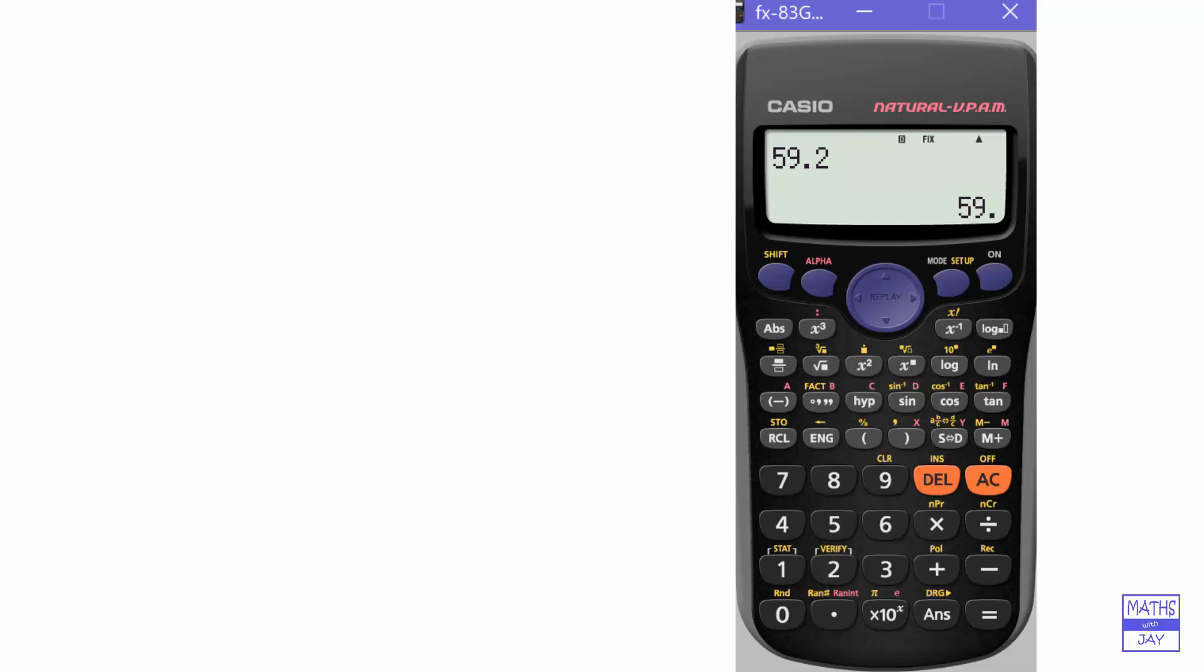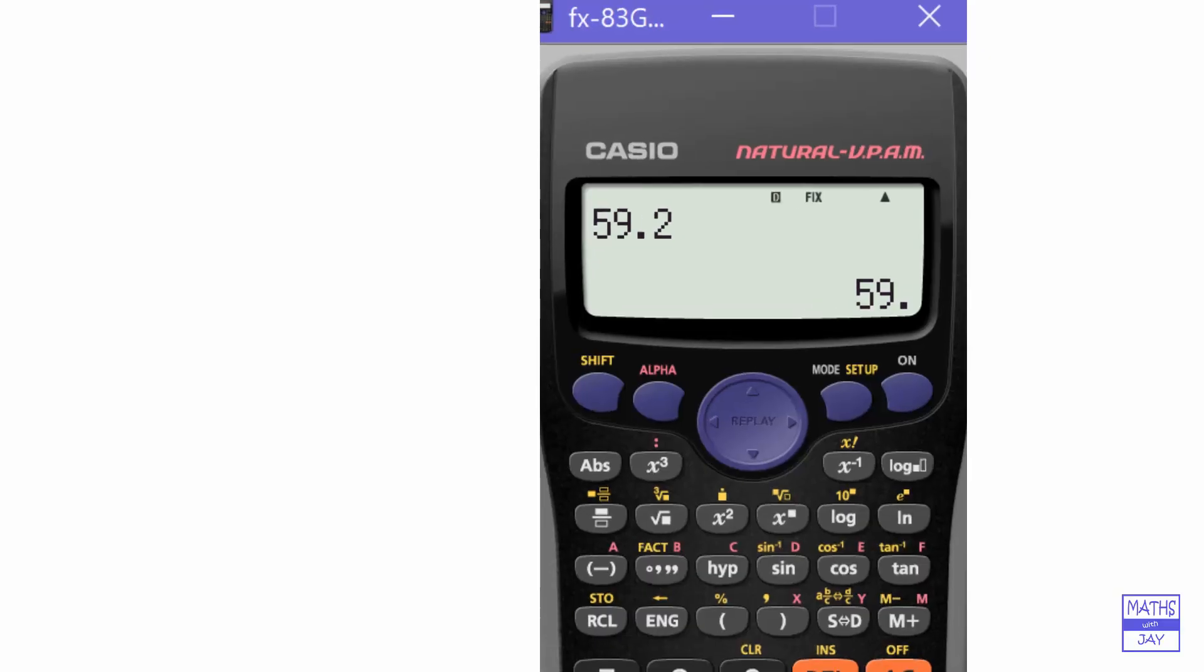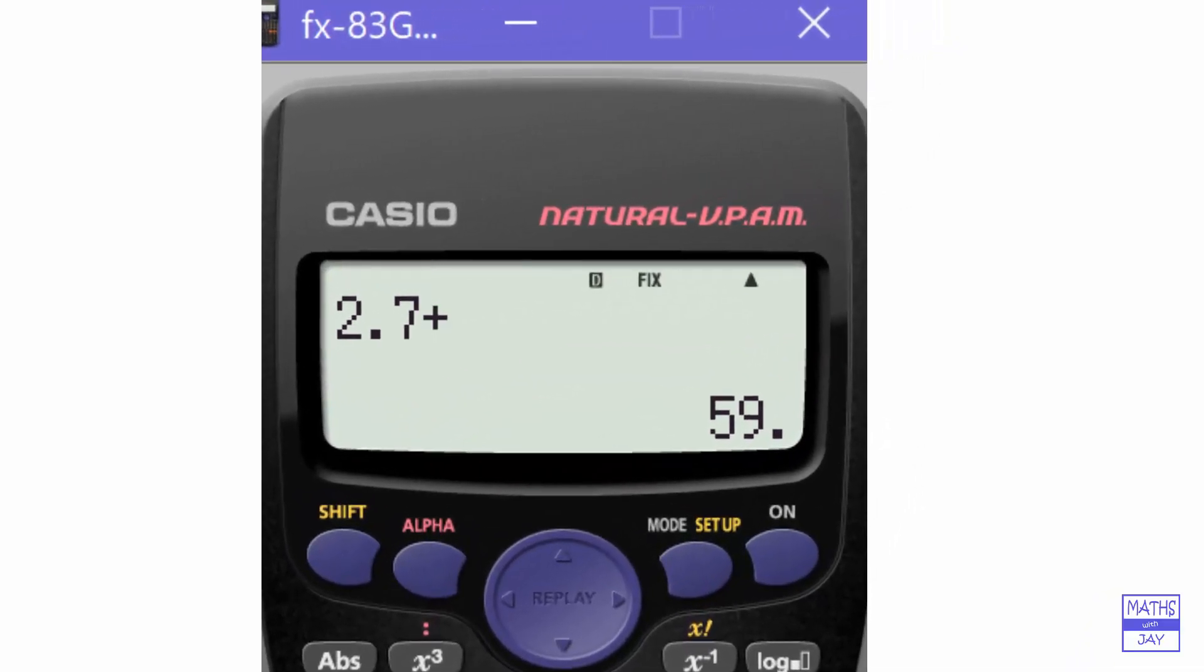Or of course you could key in a calculation and at the end of the calculation the number will be rounded to the nearest whole number. So for example, 2.7 plus 3.1 that would be 5.8, and the calculator will automatically round that to 6 to the nearest whole number.